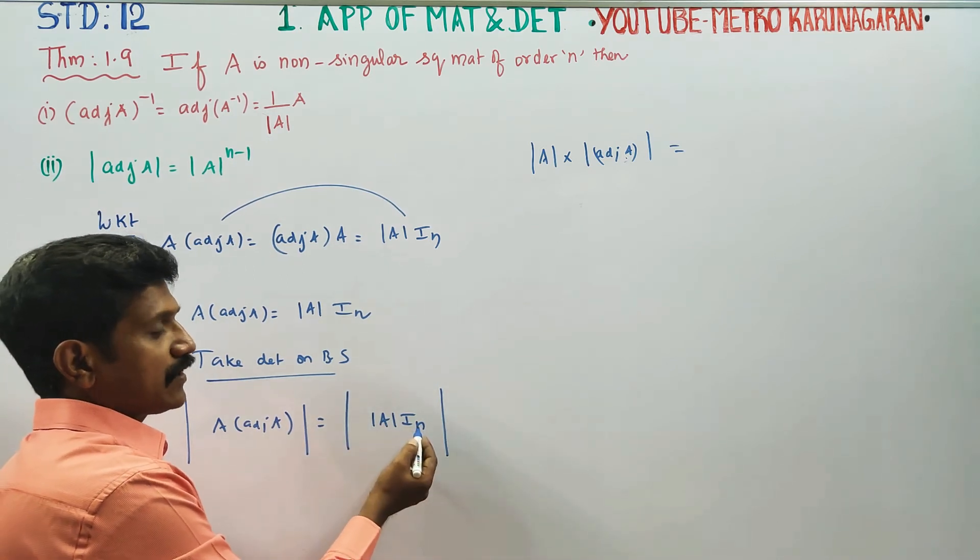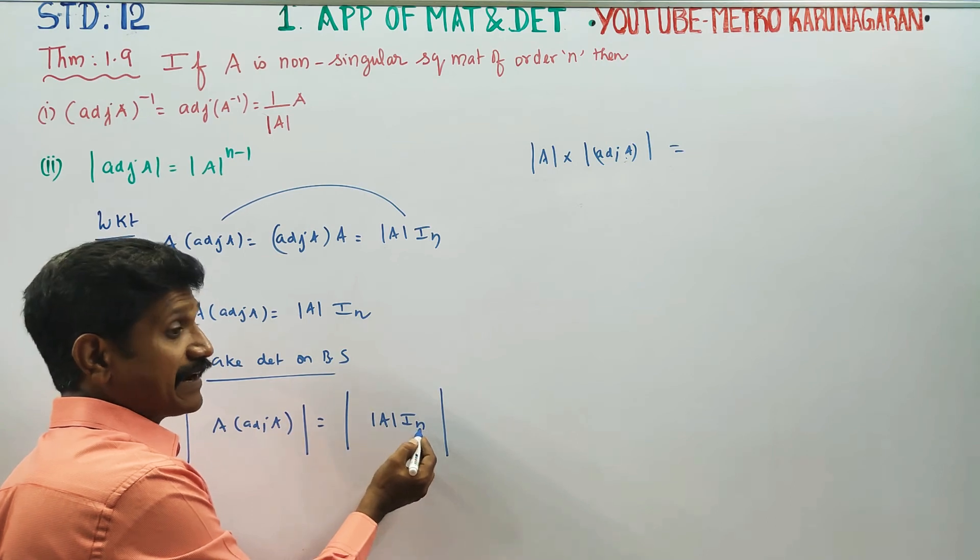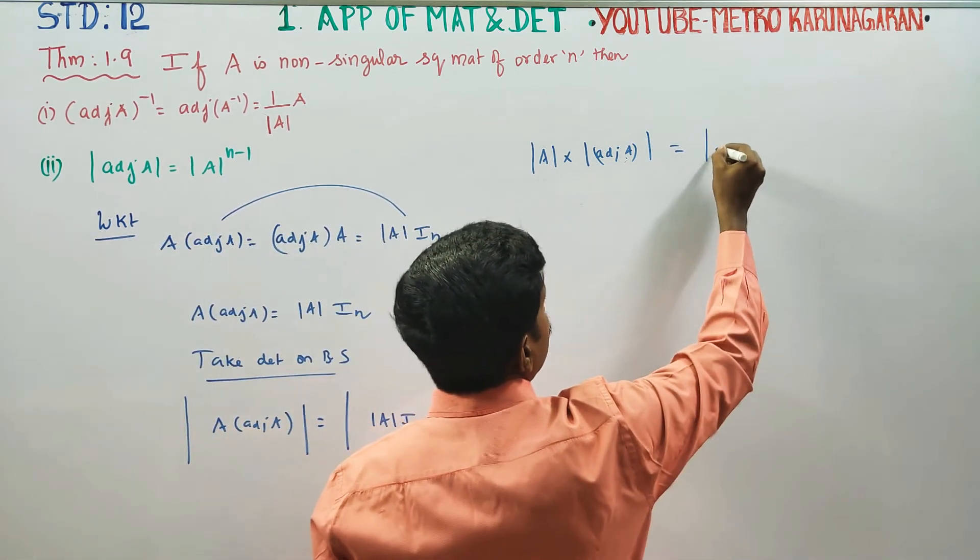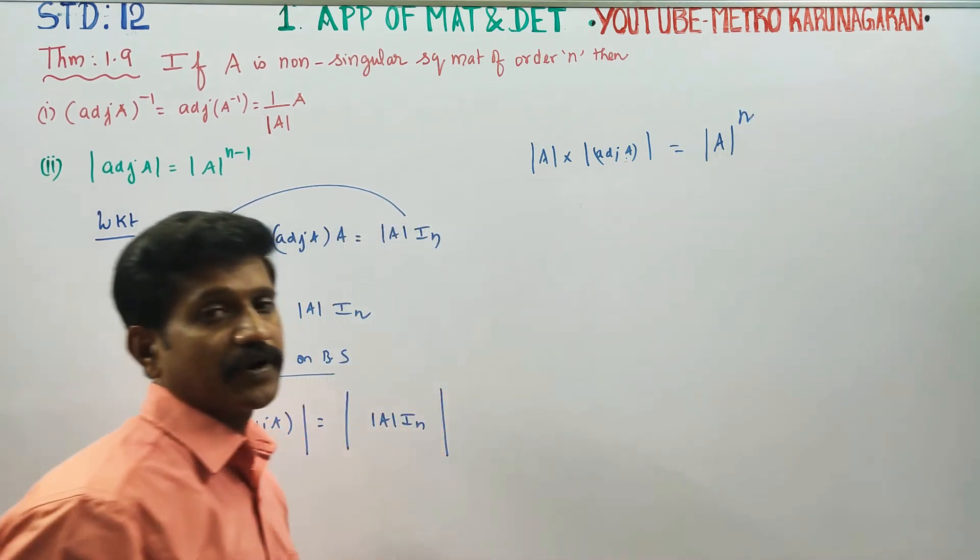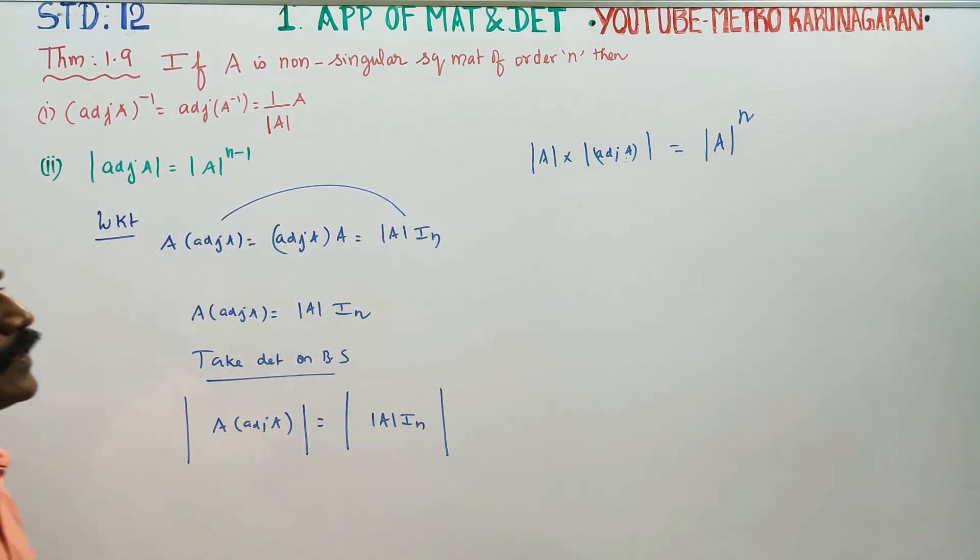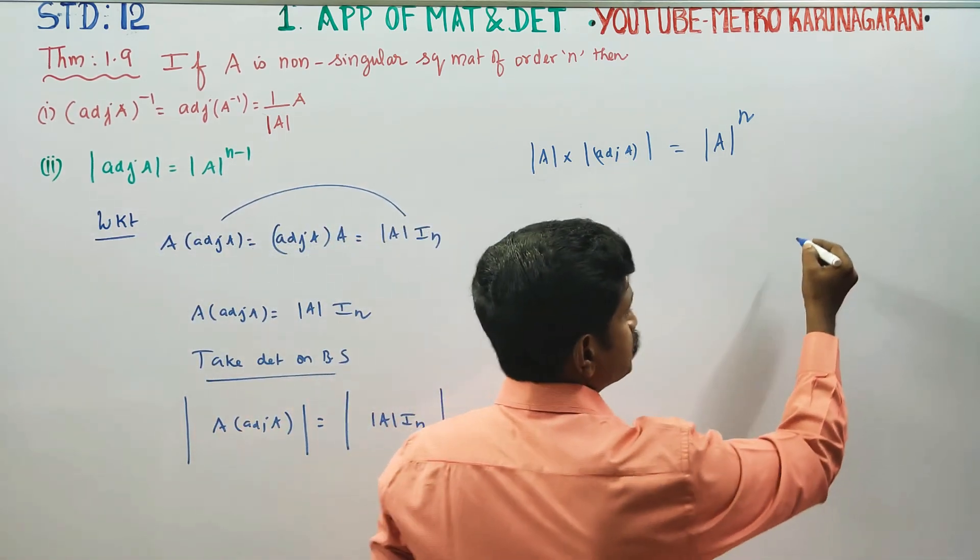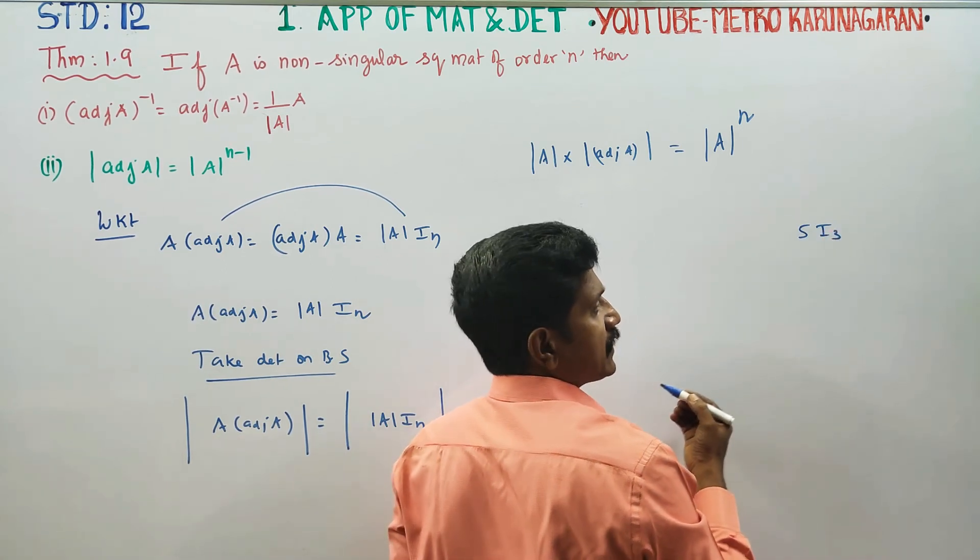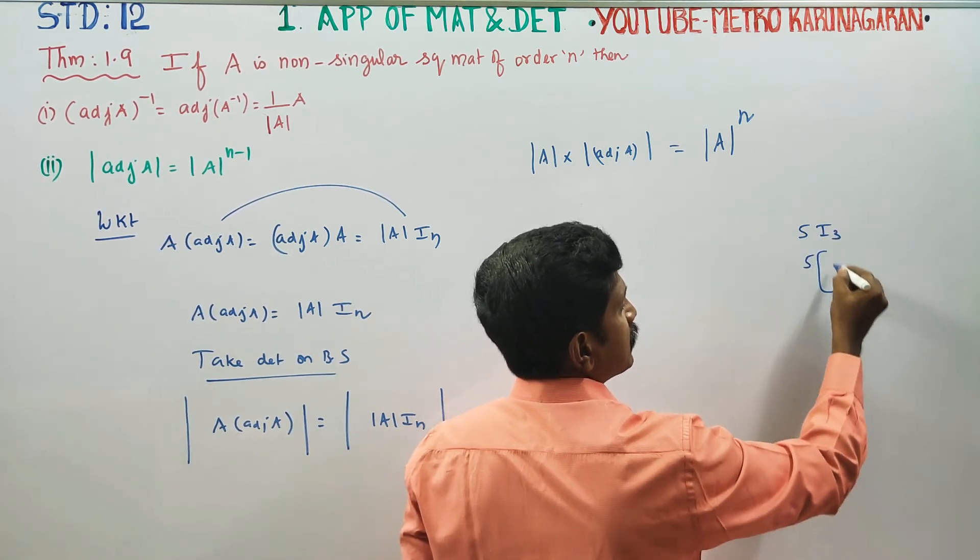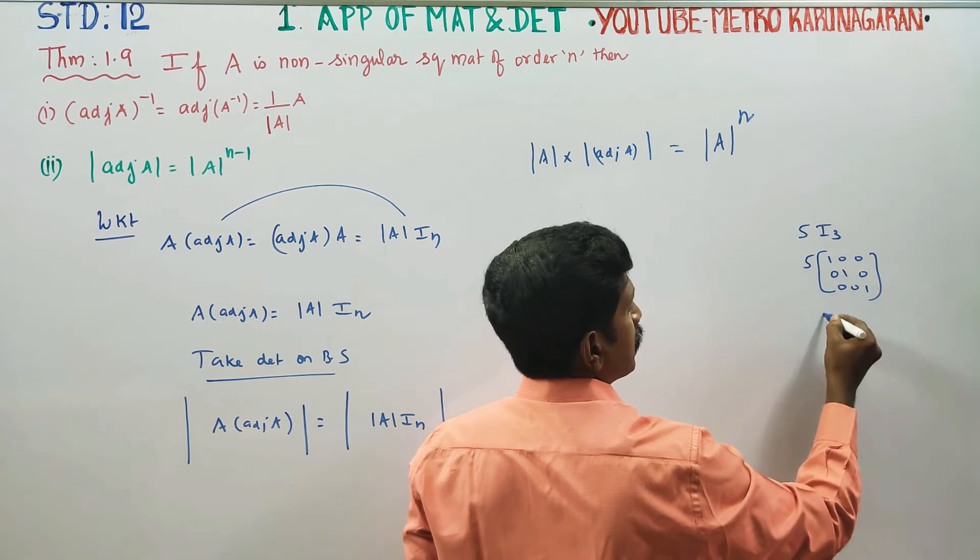This is equal to a constant into I_N. For rows and columns of order n, the determinant value equals the constant to the power n. For example, 5 into I_3 gives the identity matrix multiplied by 5.